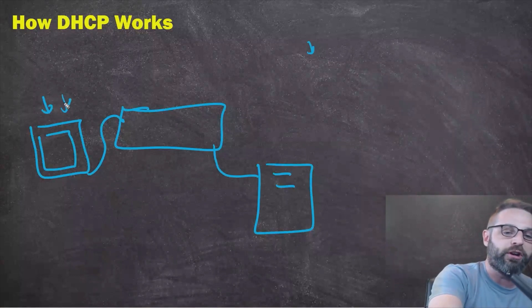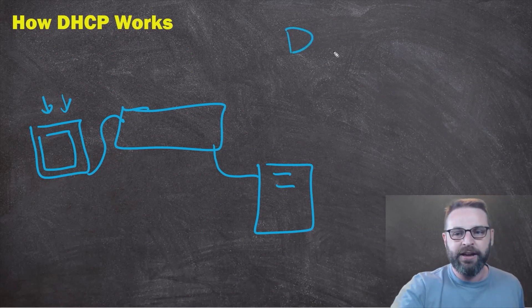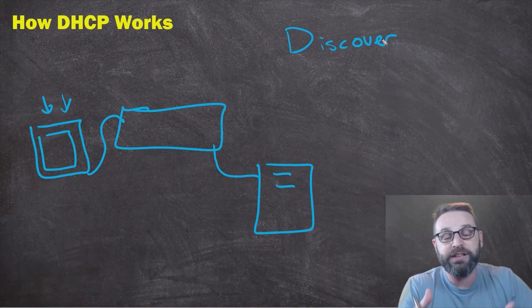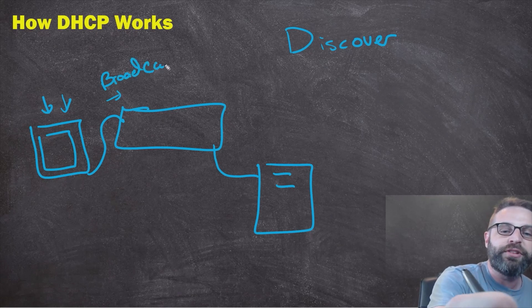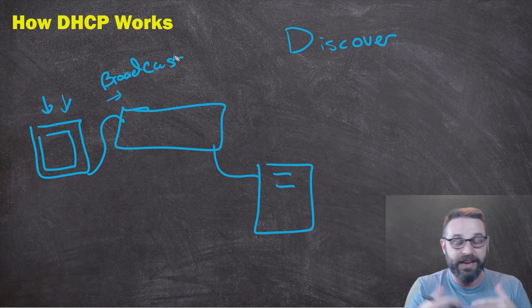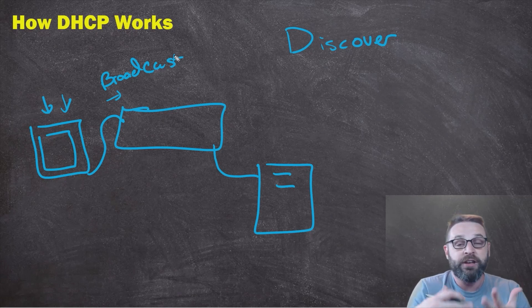So when this computer turns on, it starts shouting. The first process here that we call this is a D or a discover message. It's basically saying, hey, I'm trying to discover what network I belong to. I'm trying to speak the language of DHCP. So it literally sends a broadcast message. Very important to know this term, that this is a broadcast message, because this basically says anyone who is on my subnet, anyone who's on my network or in my VLAN is going to receive this message.